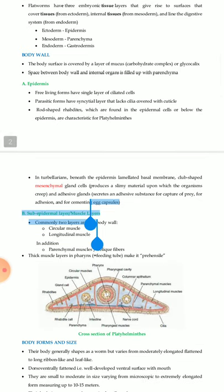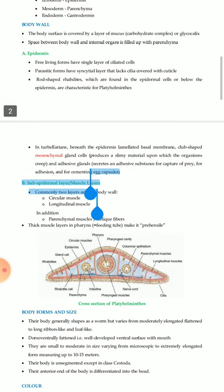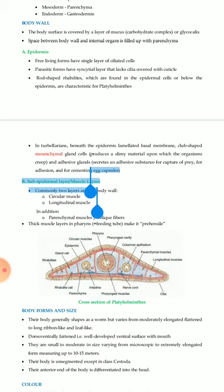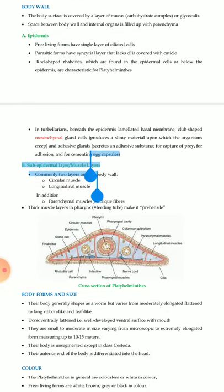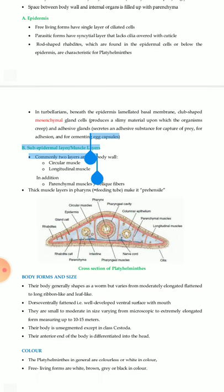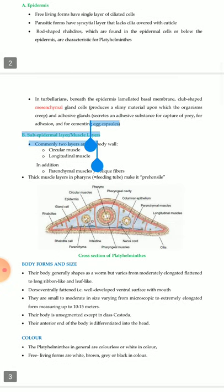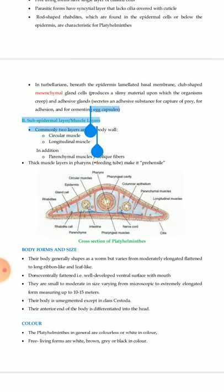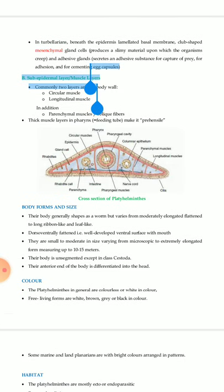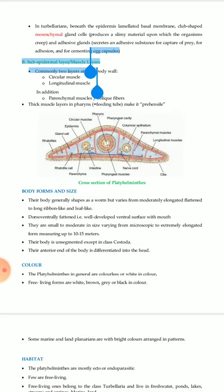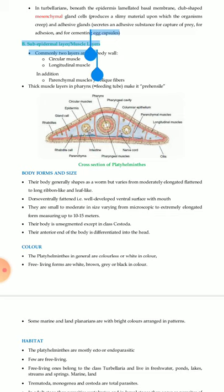Ectoderm forms epidermis, mesoderm forms parenchyma, and endoderm forms gastrodermis. The body surface is covered by a layer of mucus — a carbohydrate complex or glycocalyx. The space between the body wall and internal organs is filled with parenchyma. Free-living forms have a single layer of ciliated cells; parasitic forms have a syncytial layer lacking cilia, covered with cuticle. Rod-shaped rhabdites found in or below the epidermal cells are characteristic of Platyhelminthes. Beneath the epidermis is a laminated basal membrane; club-shaped mesenchymal gland cells produce a slimy material on which organisms creep, and adhesive glands secrete substances for prey capture and cementing egg capsules.